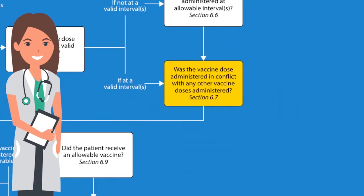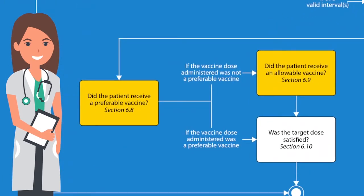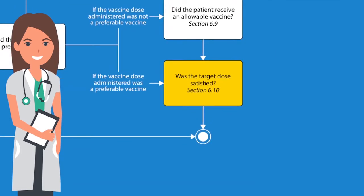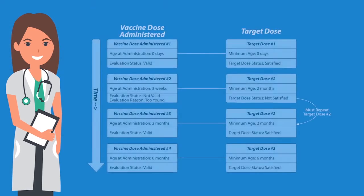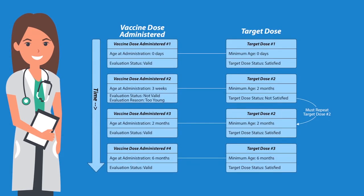Additionally, the assessment determines if a vaccine dose was given in conflict with any live virus vaccines, was a preferable or allowable vaccine, and, ultimately, if the vaccine dose administered satisfied the ACIP-defined target dose. At the end of the evaluation process, we are able to determine which vaccine doses are valid and which are not valid.